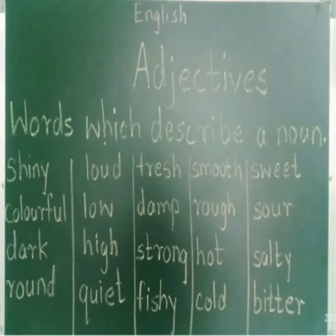Next comes nose. Through our nose, we can describe the fragrance — that is fresh, damp, strong, fishy. These are the words which can be described with the help of our nose.